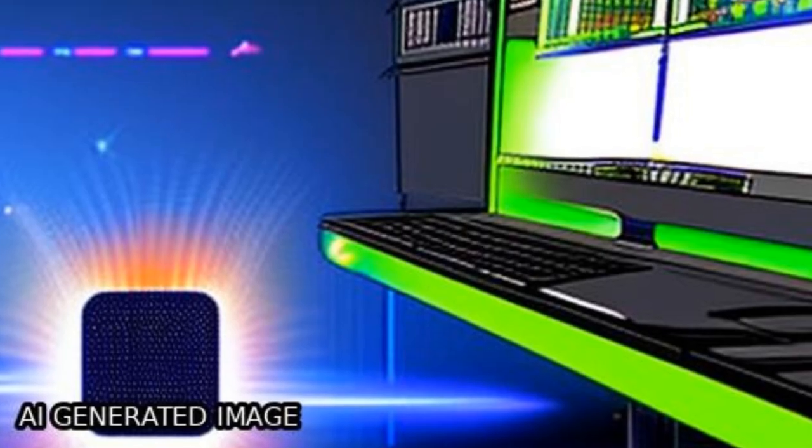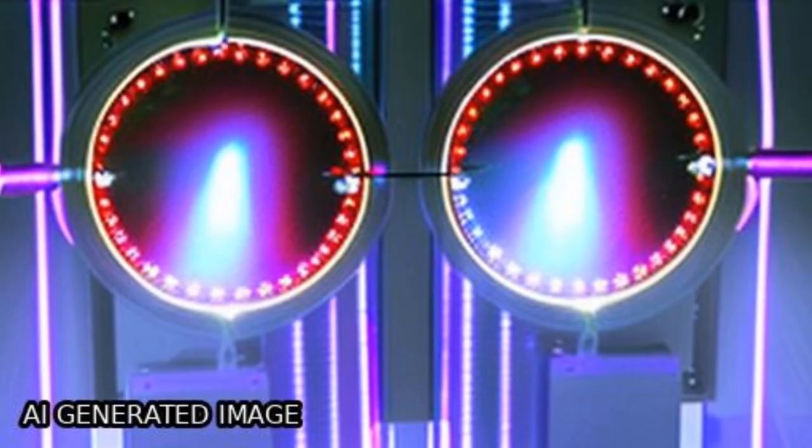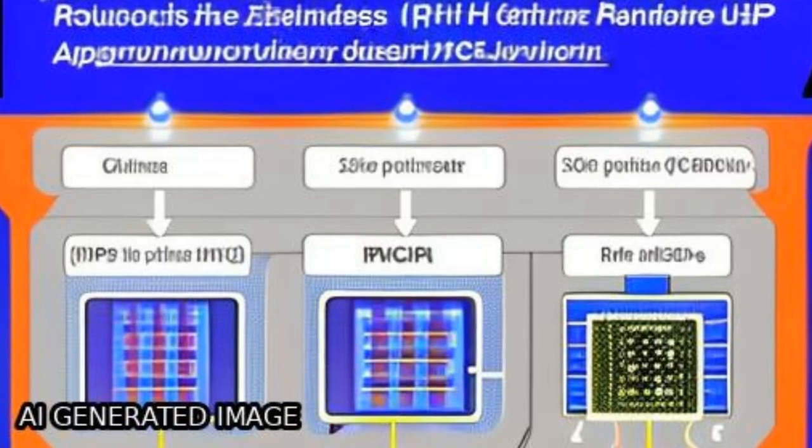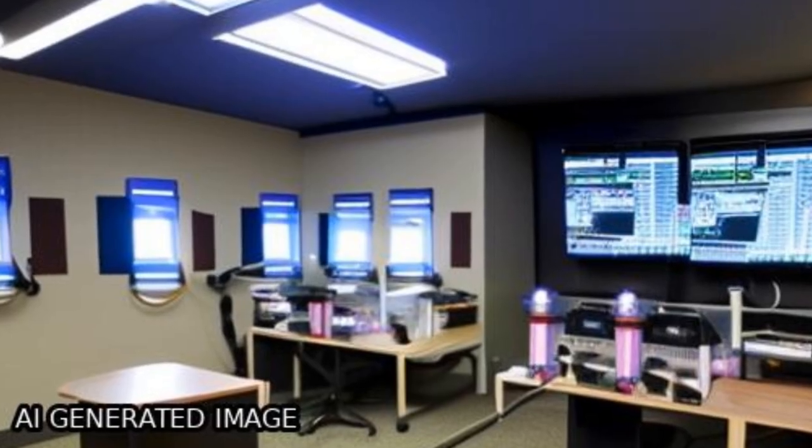This study proposes a theoretical approach to efficiently generate extreme ultraviolet isolated attosecond pulses, IAPs, at multi-MHz repetition rates using cavity-enhanced high harmonic generation, HHG.